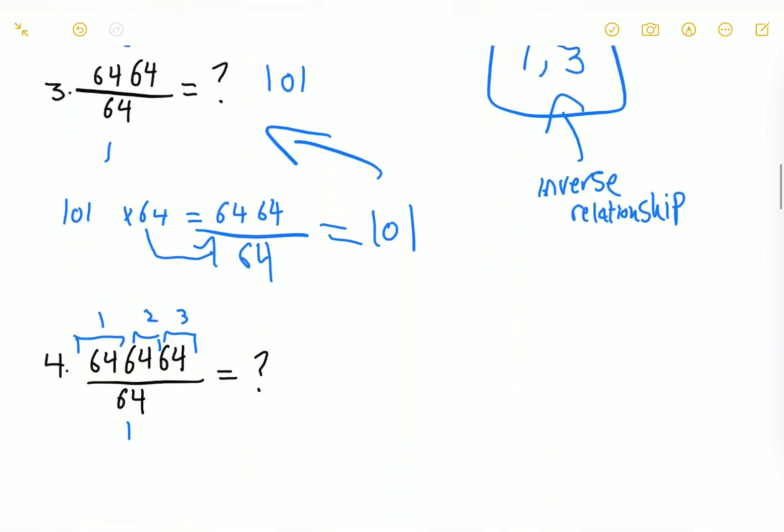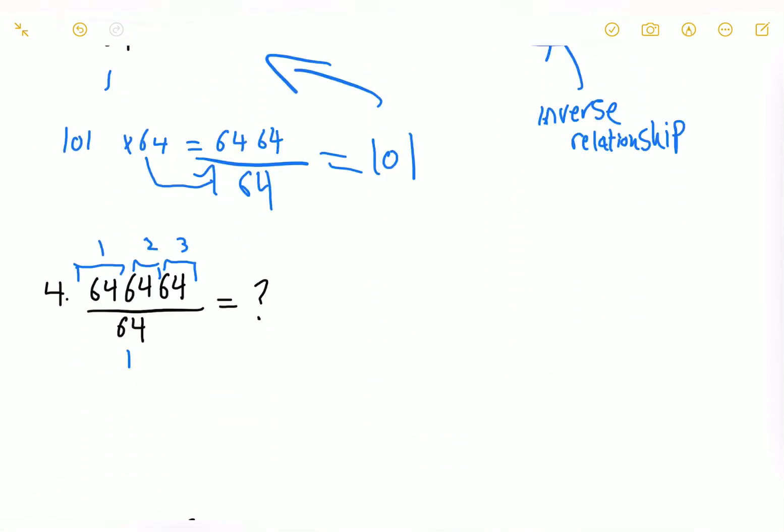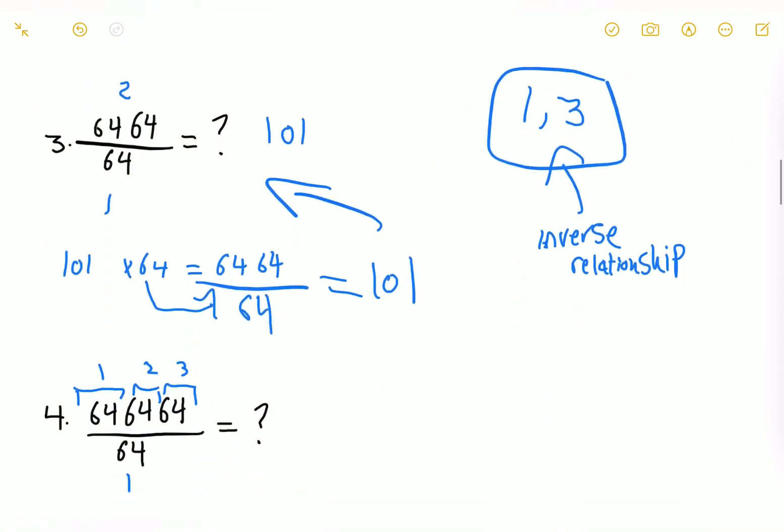We had this multiplied by this gives us this. Now, for number 4, we have the inverse relationship of number 2. Now, let me show you what I mean. As you can see, we have 1, 2, and 3 sets of 64's on the numerator, meaning there's going to be 3 ones. And how many times is it repeated? It's 3 times. And the amount of 0's is always minus 1. So there's 3 sets of 64's minus 1, meaning we have 2 zeros. There we go. We got it.